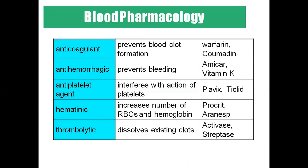Coming to pharmacology: anticoagulants prevent blood clot formation. Anti-hemorrhagic agents prevent bleeding. Anti-platelet agents also prevent blood clotting. Hematinics are given to anemic patients to increase the number of RBC and hemoglobin. Thrombolytics dissolve blood clots and are usually given to stroke patients.